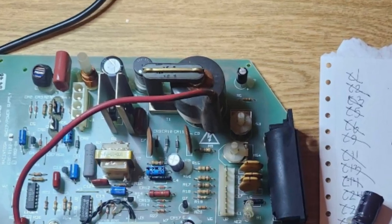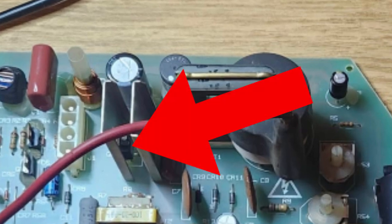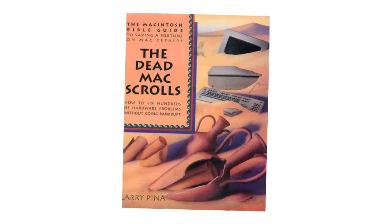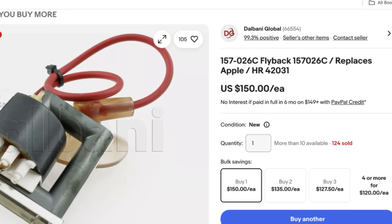While it was on, I noticed the burning smell again and traced it to the horizontal output transistor on the analog board. The transistor became super hot after only being on for a minute. At this point, I consulted the 1992 book The Dead Mac Scrolls for an answer. Before long, I came to page 17, which described my problem very closely. The Dead Mac Scrolls said to replace the flyback transformer and horizontal output transistor.